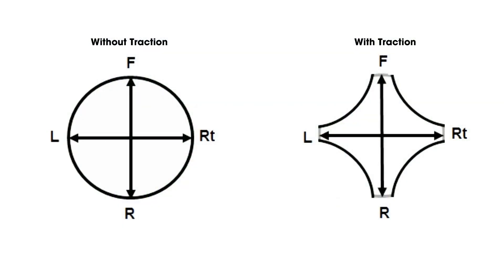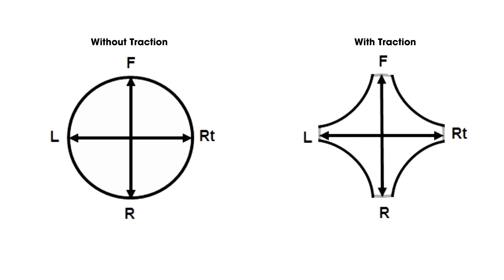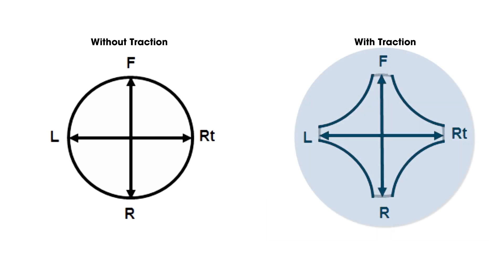The graphic on the screen shows the joystick axes on the left, where the traction value is zero. Each quadrant represents a directional command for the joystick we would call a turn or a veer. The speed possibilities are represented by the encompassing circle. However, on the right of the screen, where traction values have been increased, the speed possibilities for turning have been decreased.